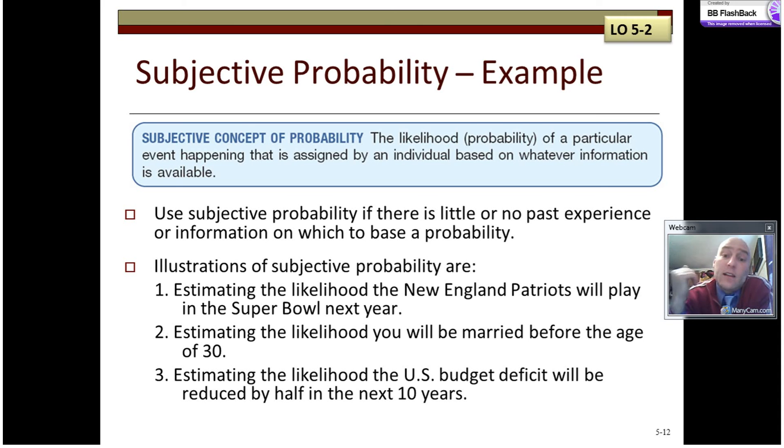You might estimate the likelihood you will be married before the age of 30. I mean, that's sort of guessed based on your personality what you think might happen. I know that that true probability is zero because I'm older than 30 and not married, so it's impossible. Zero. We might estimate the likelihood that the budget deficit will be reduced in half in the next 10 years. I'm just going to say it's really, really low because I don't think it's on anybody's priorities or anything's going to get done. That's just my opinion. Again, it's subjective.